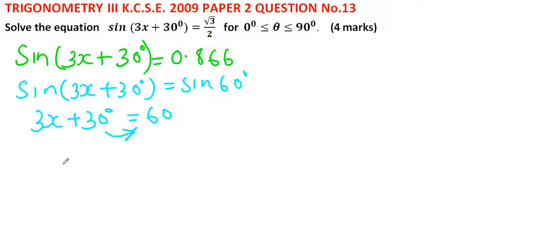We take 30 to the other side, we get 3x = 30, and therefore x = 10°. So that is the first angle.